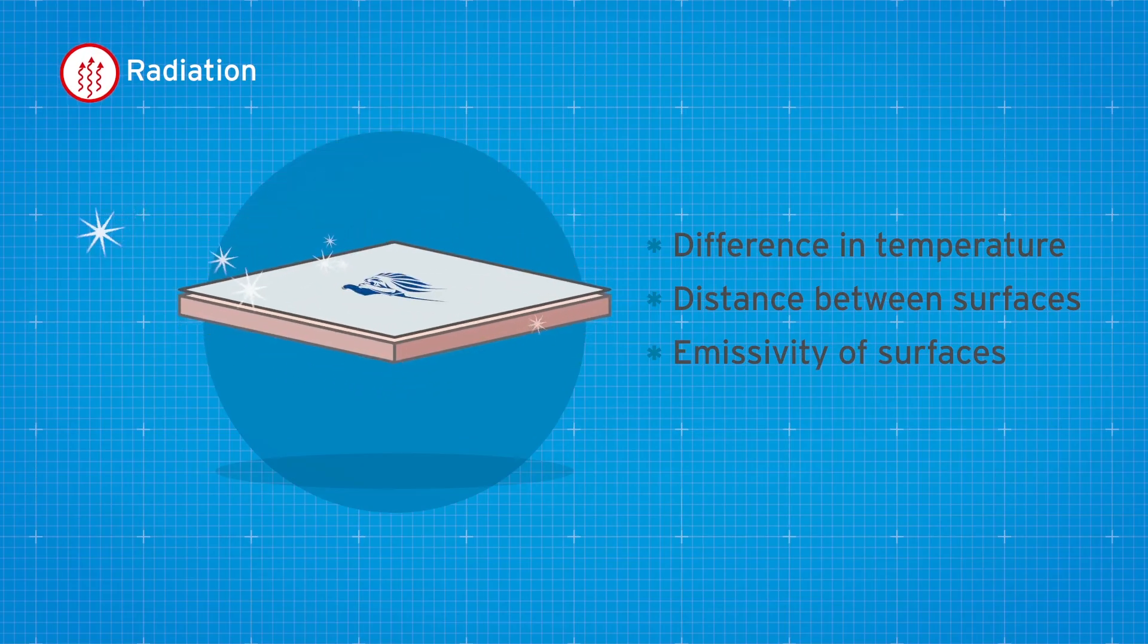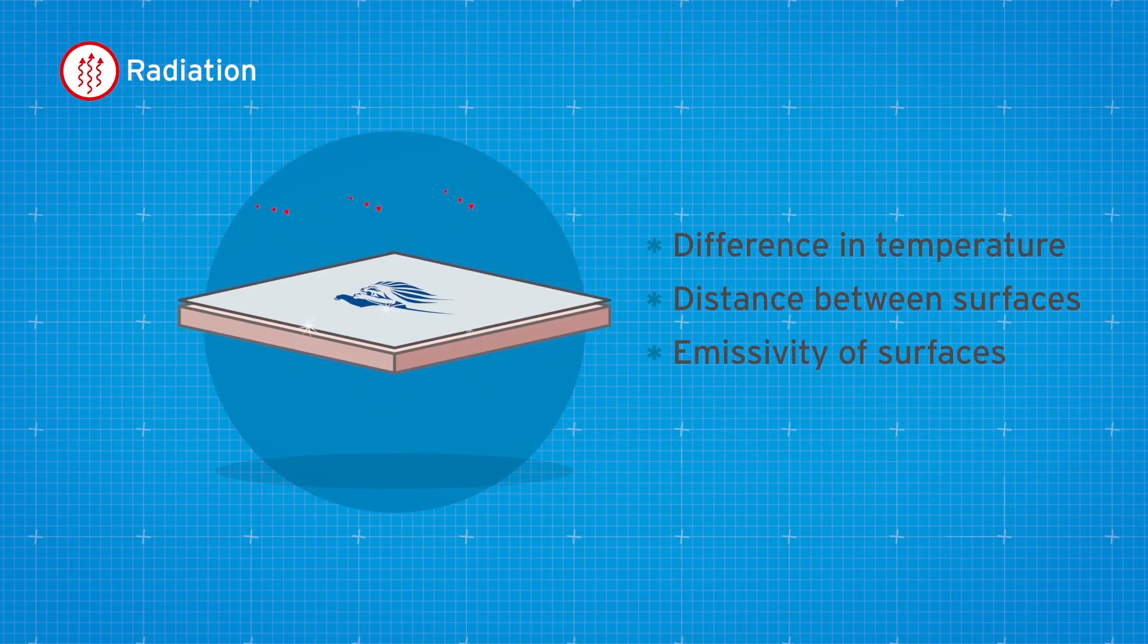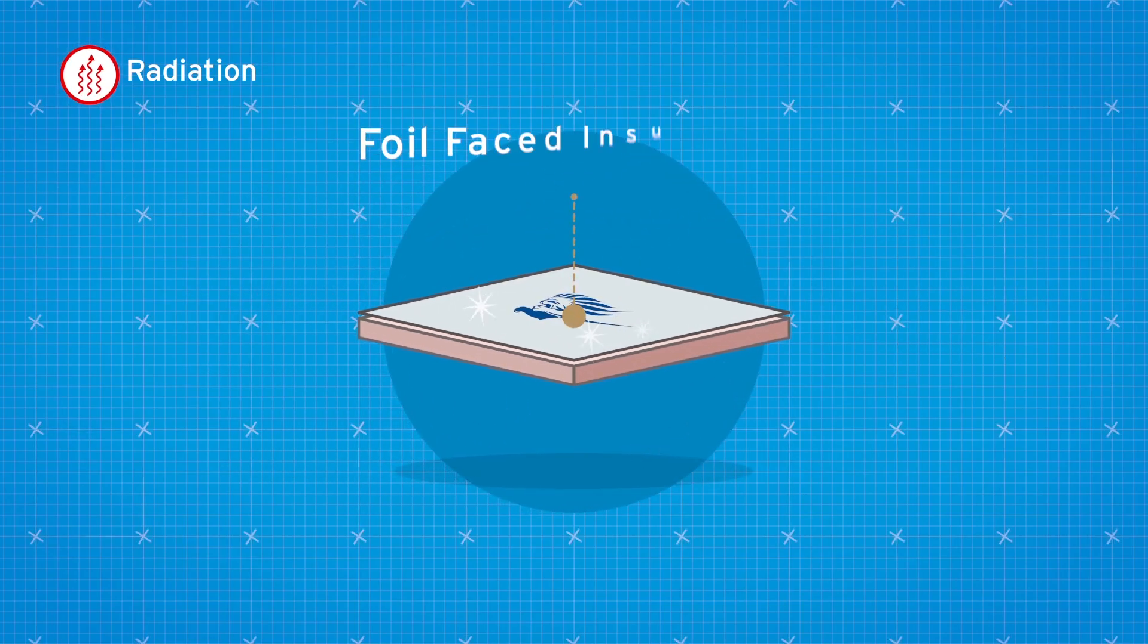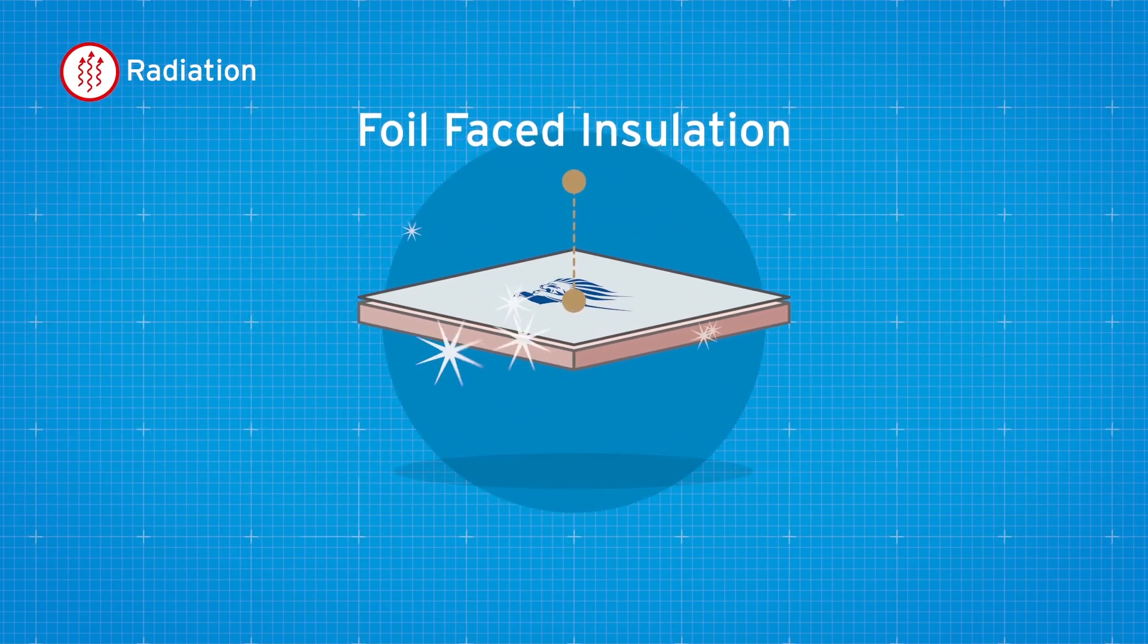Emissivity is how shiny a surface is, in other words, its ability to reflect thermal radiation. An example would be a low emissivity foil facing on an insulation panel or board.